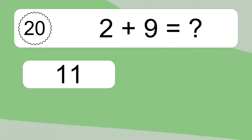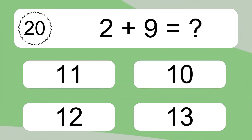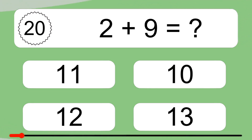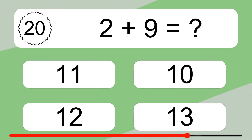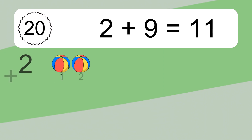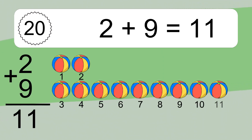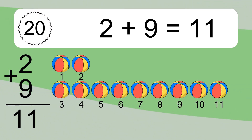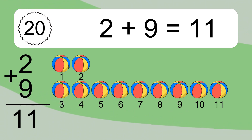2 plus 9 equals what? 2 plus 9 equals 11. Let's count it. 1, 2, 3, 4, 5, 6, 7, 8, 9, 10, 11.